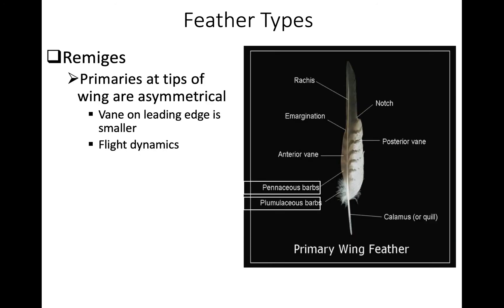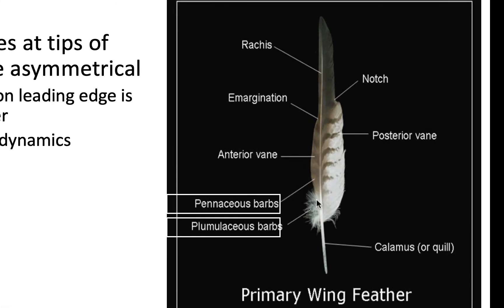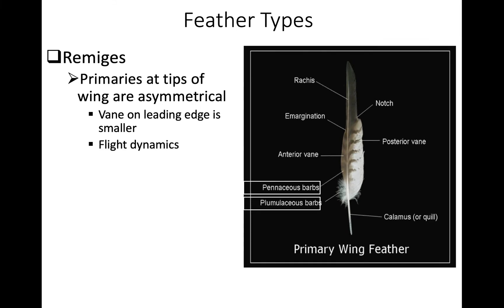The primaries at the wing tips are much more asymmetrical than more medial ones — this is important for flight aerodynamics. A tip primary has a much thinner anterior vane facing forward than the posterior vane, and often has a notch midway. This allows separation of the wing feathers so they act almost like individual little wings, which is particularly important in broad-winged species to reduce drag.